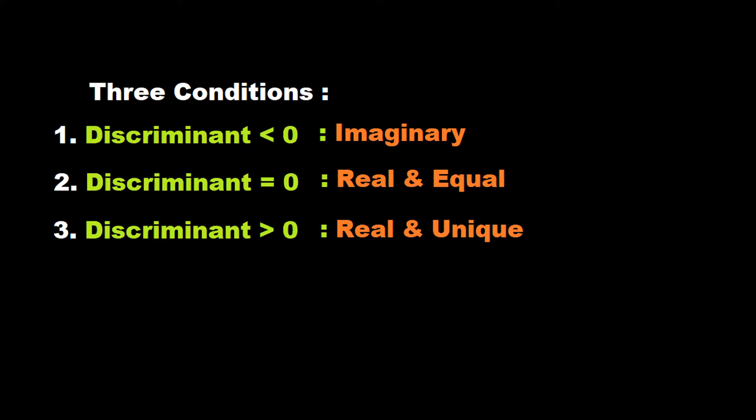As you can see here, these are the three conditions. Discriminant less than 0 means the roots are imaginary. Discriminant equal to 0 means the roots are real and equal, and discriminant greater than 0 means the roots will be real and distinct.